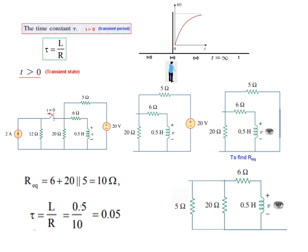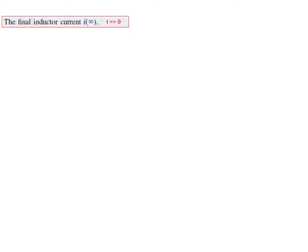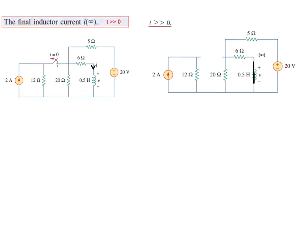So we have found the second parameter, that is tau. Now let's go to the third parameter, I infinity, for t much greater than 0. The switch is again open. So this is the circuit. Now the circuit is in steady state condition, so the inductor will be short-circuited. We need to find this current which is now called I infinity.